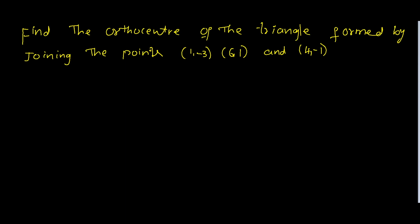Second problem: find the orthocentre of the triangle formed by the points (1, -3), (6, 1), and (4, -1).